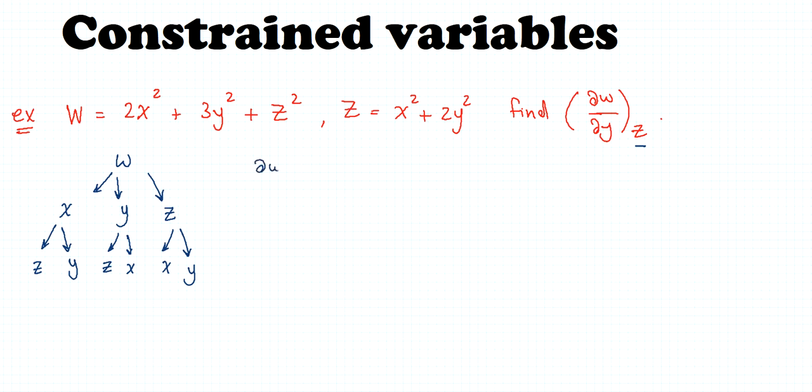If we want to find dw/dy, this is equal to dw/dx times dx/dy plus dw/dy plus dw/dz times dz/dy.